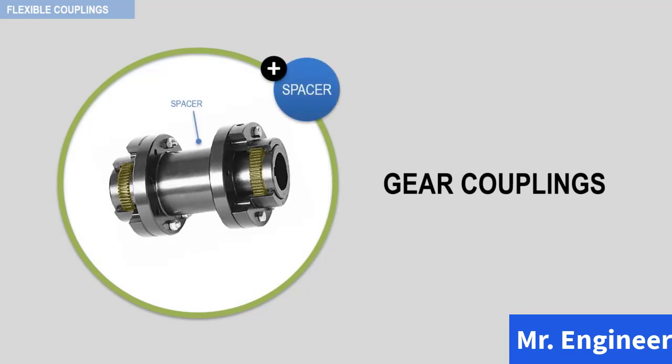If the internal gears are hub mounted, then the external gears are spacer mounted, and vice versa. This is depicted in this cross-section.